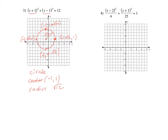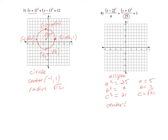Number 4 is an ellipse. For an ellipse, the major axis goes by the larger denominator. Since y squared has the larger denominator, a squared equals 25, meaning a equals 5. B squared equals 4, so b equals 2. C squared — in the ellipse — is a squared minus b squared, so 25 minus 4 is 21, and c equals the square root of 21. The center is at (2, −1).